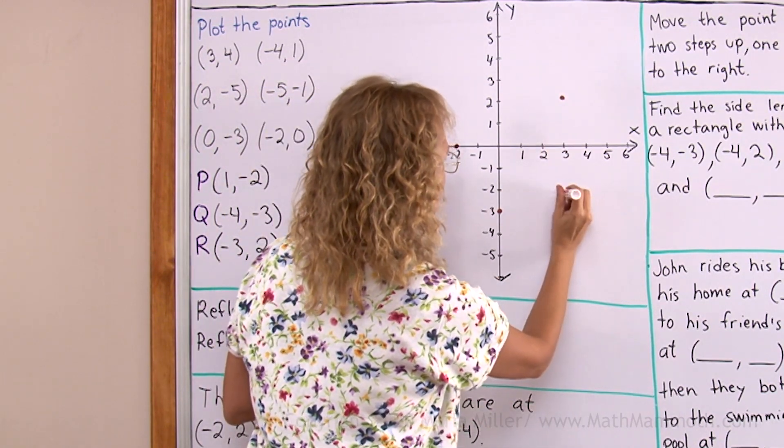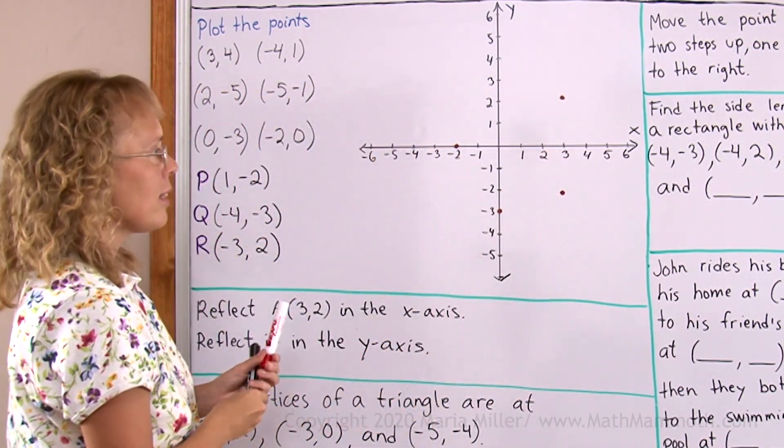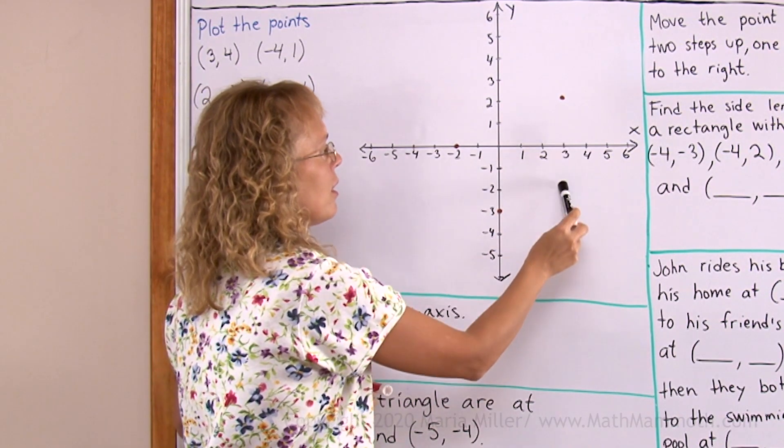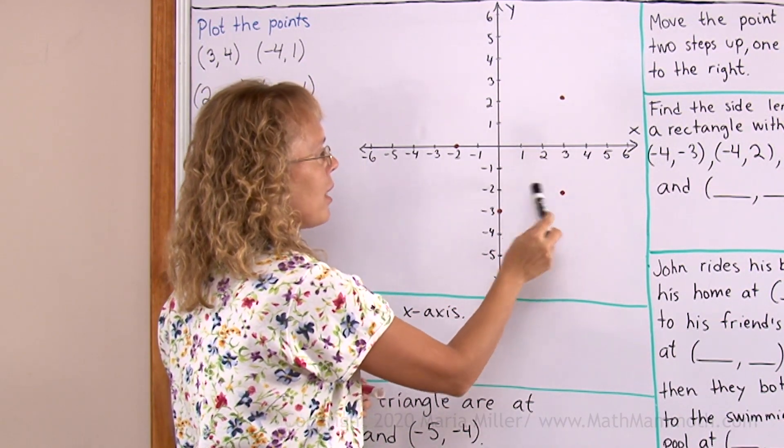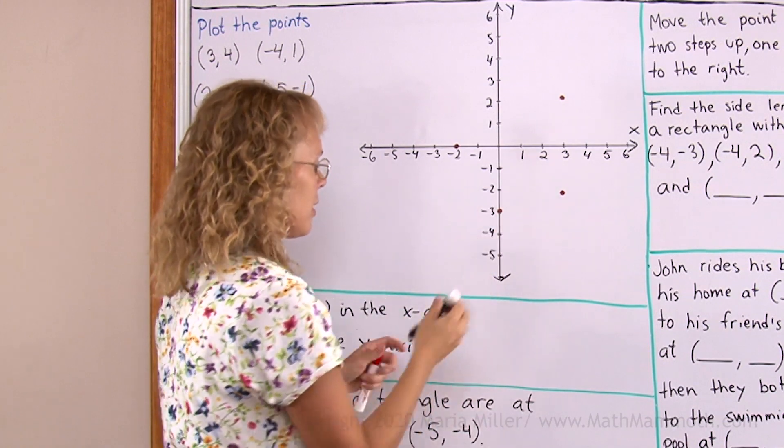So we get that the point is then at, you look up to the x-axis and over here to the y-axis, it is at (3,-2).